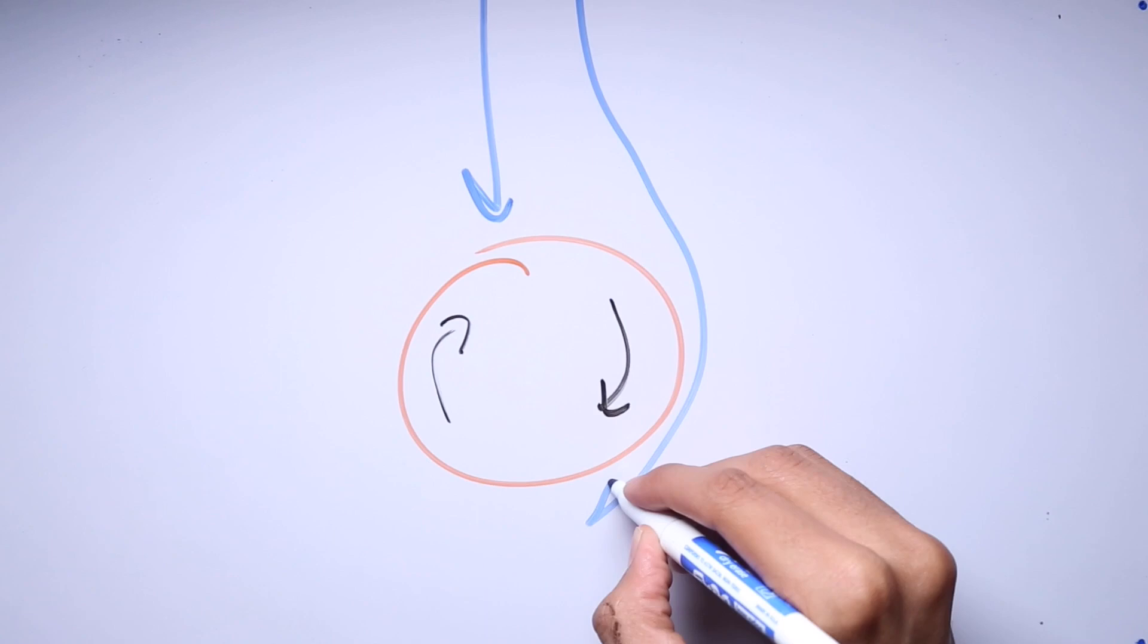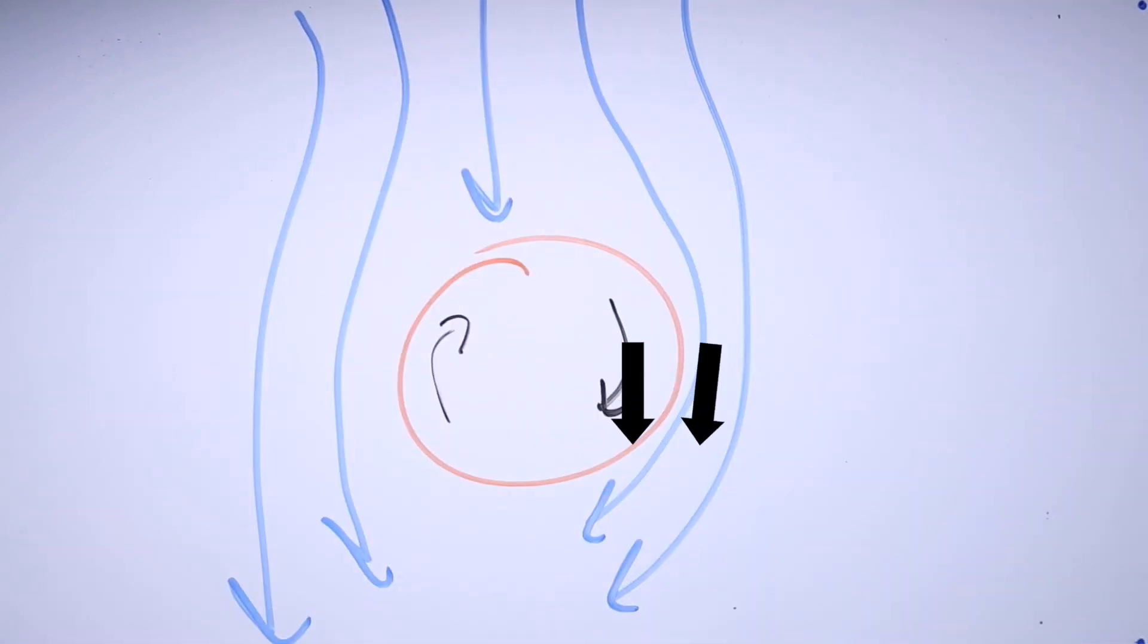On the right side of the ball, the air and the surface of the ball are moving in the same direction, while on the left side of the ball, the air and the surface of the ball move in the opposite direction.